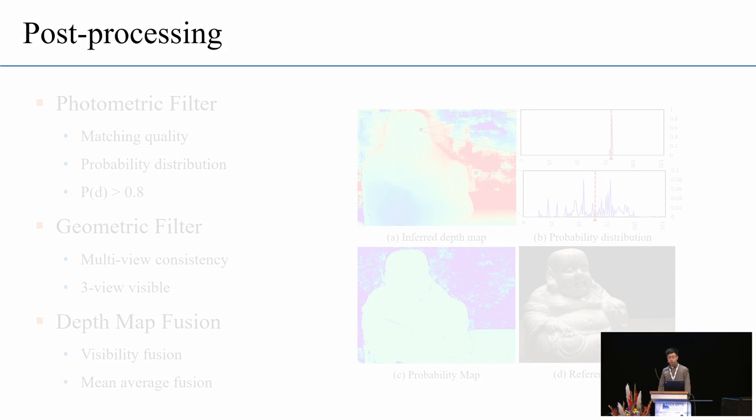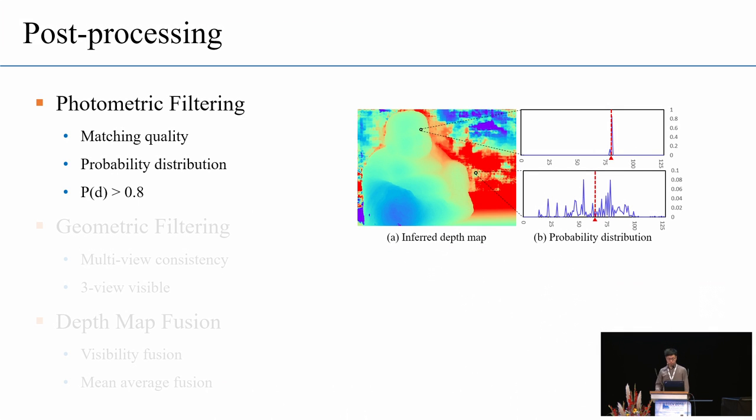So, so far we have introduced how MVSNet generates the depth map. To further obtain the 3D point cloud, we can apply the depth map filter and the depth map fusion for the post processing. So, in this work, we propose two criteria for the robust depth map filter. The first one is the photometric consistency, which measures the matching quality. As mentioned in the previous slides, MVSNet will generate a probability volume for the depth map regression. So, in fact, this probability volume can also reflect the depth map reconstruction quality.